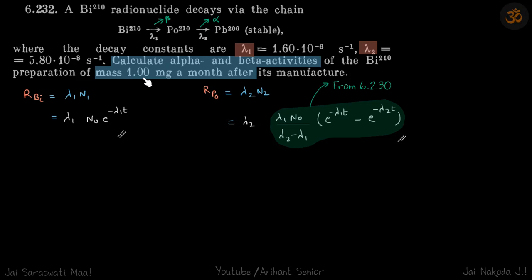From the preparation mass of 1 milligram after a month. So beta activity occurs when this occurs, and alpha activity happens when this occurs. You can see from the mass number, here mass number is decreased by 4, which means alpha particle must have decayed here. And here mass number is same, so beta particle must have decayed here.